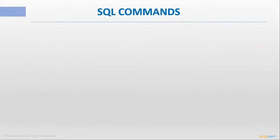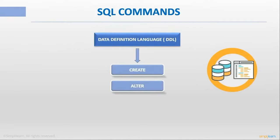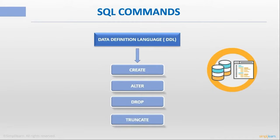SQL Commands: We know that SQL commands are broadly classified into four types. The first one is Data Definition Language (DDL). DDL allows the user to define the table and make changes to its overall structure. Commands used in DDL are: Create — used to create a new table; Alter — used to modify the existing table by adding new attributes; Drop — used to delete the whole table and the data stored in it; Truncate — used to delete the rows in a table. Now that we have got an understanding of various operators, data types and commands, let us look at the syntax of all these commands.